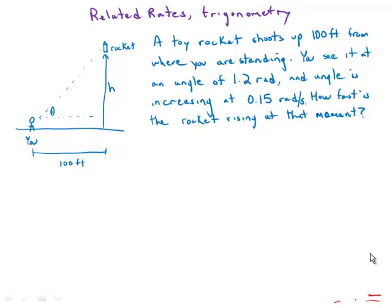A toy rocket shoots up a hundred feet from where you were standing. At a moment when you see it at an angle of 1.2 radians above you, the angle is increasing at 0.15 radians per second. How fast is the rocket rising in the air?